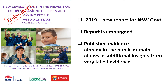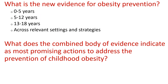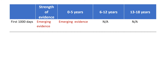The University of Sydney has recently produced a new evidence summary for the NSW Government. Whilst the report is embargoed, the published evidence already in the public domain allows us additional insights from the very latest evidence. Two main questions are addressed: what's the new evidence for obesity prevention in these age groups and across settings and strategies, and what does the combined body of evidence indicate as the most promising actions? Existing evidence is shown as blue, whilst new emerging evidence is shown as red.